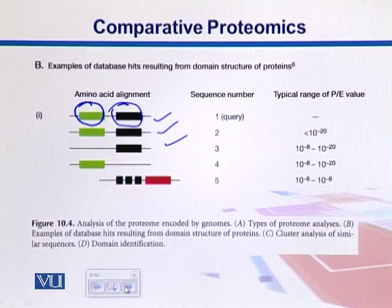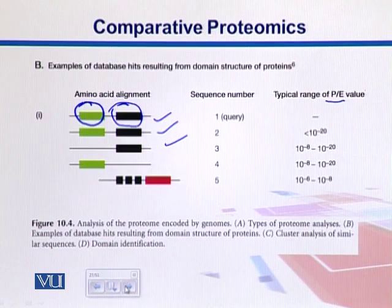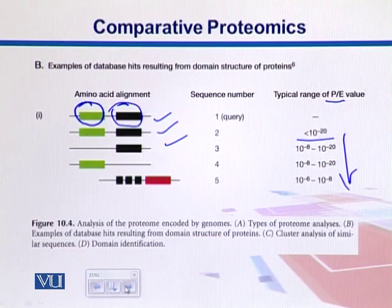We perform sequence similarity searches with software called BLAST. There are parameters called P or E values. A low E value is taken as a good score. For example, if we have a good match, the E value should be less than 10 to the power of minus 20, and it keeps decreasing as we go to more similar sequences.